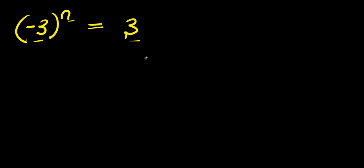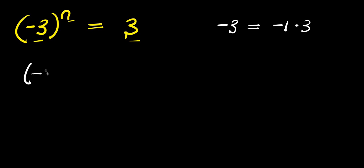In this first method, this is negative 3, and we can simply express this negative 3 as negative 1 times 3. So we have it here as negative 1 times 3, raised to the power of n, and this equals 3.